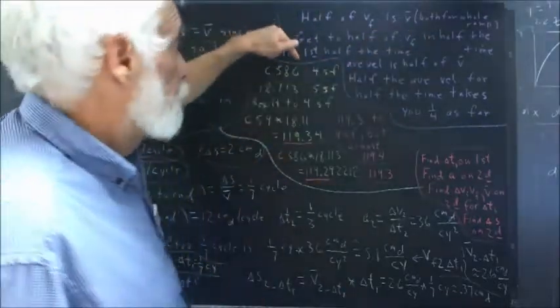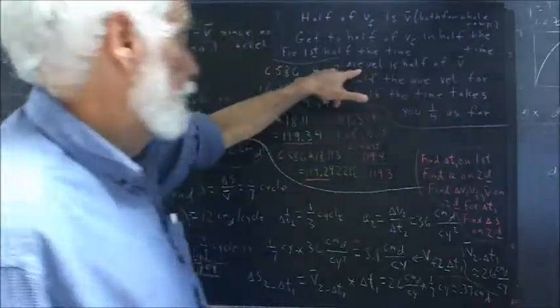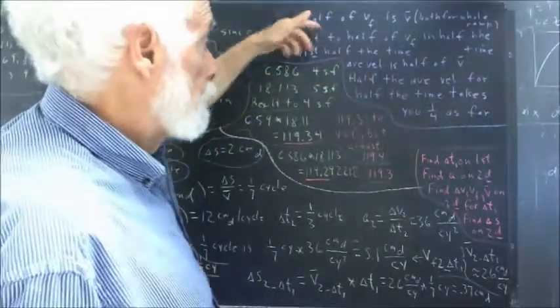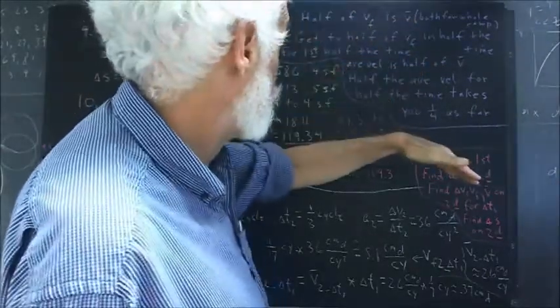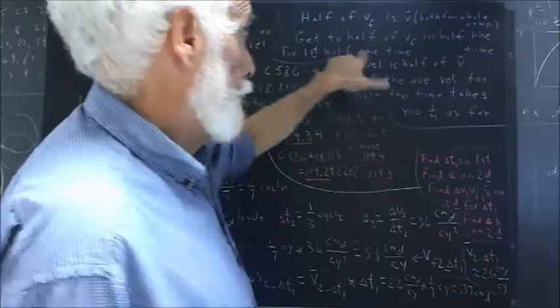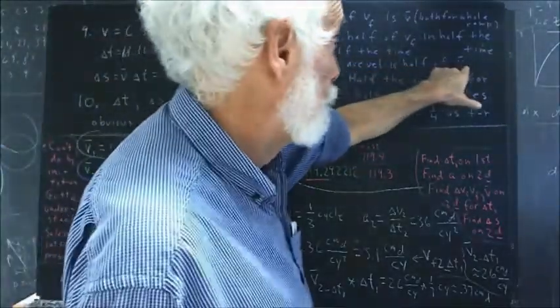So for the first half of the time that we take to get all the way down the ramp, our average velocity, since our final velocity is equal to half of the final velocity we get on the whole ramp, our average velocity for that first half of the time is half of Vbar.